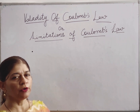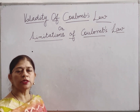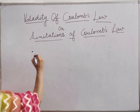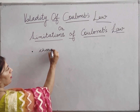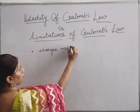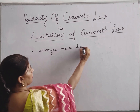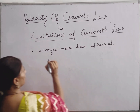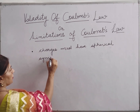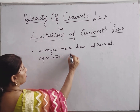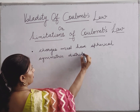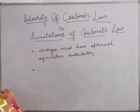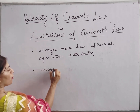The second point of validity of Coulomb's law is that the charges should have a spherical symmetric distribution. Along with that, one more condition of validity is that the charges should not overlap.